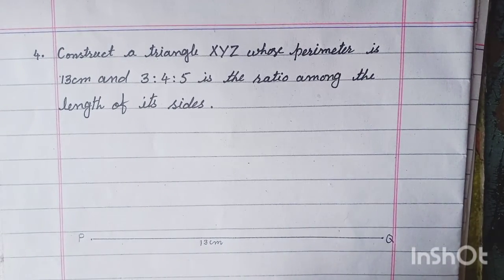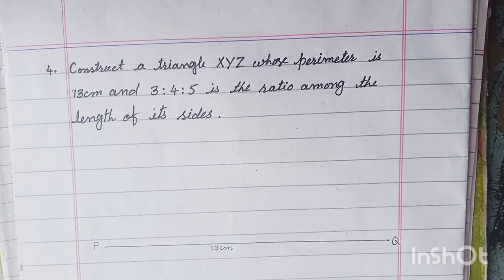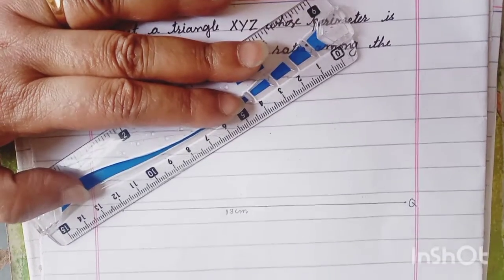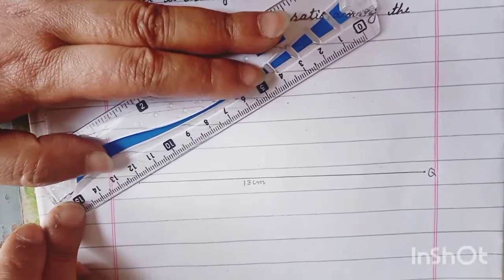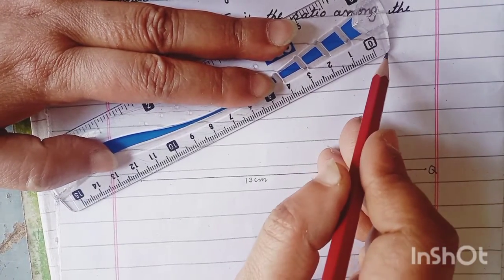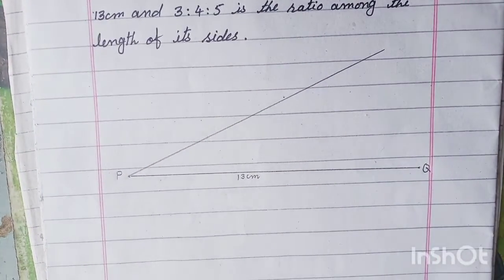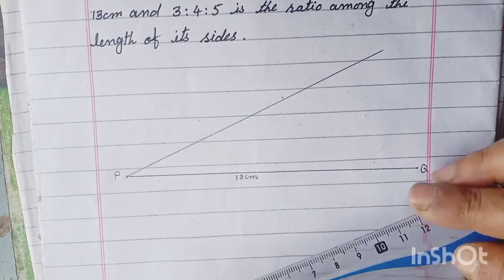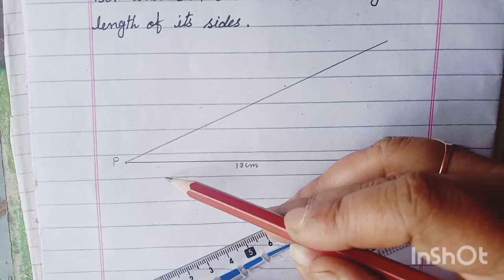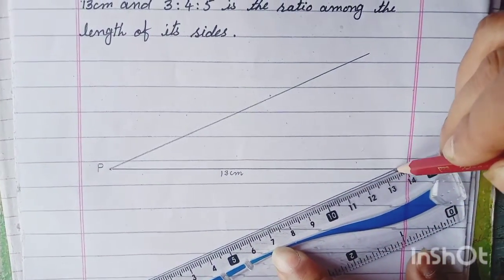اب اس کے بعد آپ دیکھیں کہ next step ہمارا کیا ہوگا. ہم نے acute angle draw کرنا ہے. پہلے P سے acute angle draw کریں گے. Acute angle جو ہوتا ہے وہ less than 90 ہوتا ہے. اسی طرح ہم Q سے بھی acute angle draw کریں گے — same ہونا چاہیے، کم زیادہ نہیں ہونا چاہیے.